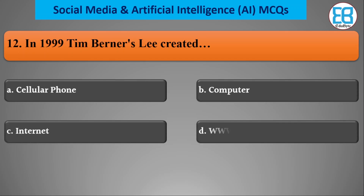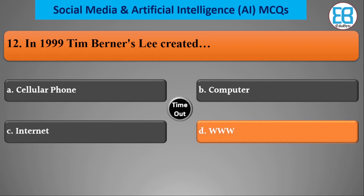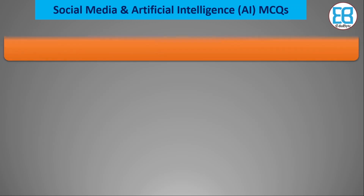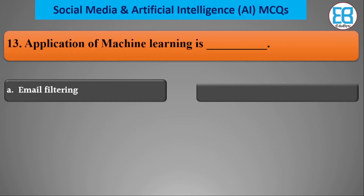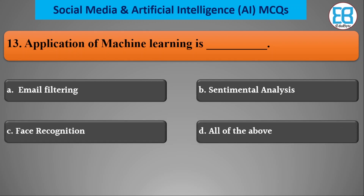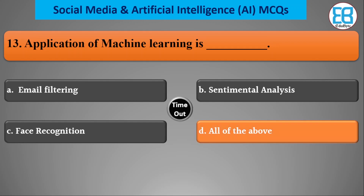In 1999, Tim Berners-Lee created the World Wide Web — WWW. What are the applications of machine learning? Options include email filtering, sentiment analysis, and speech recognition. The correct option is all of the above.